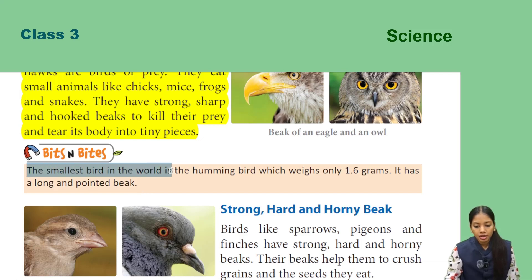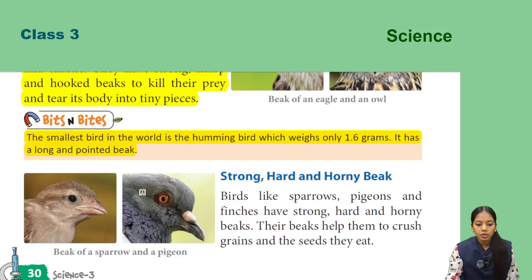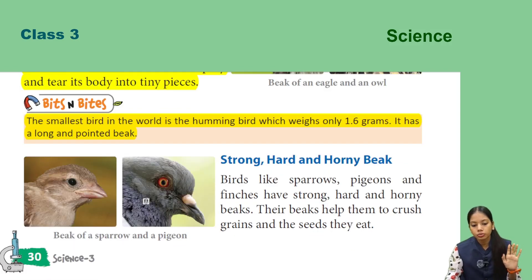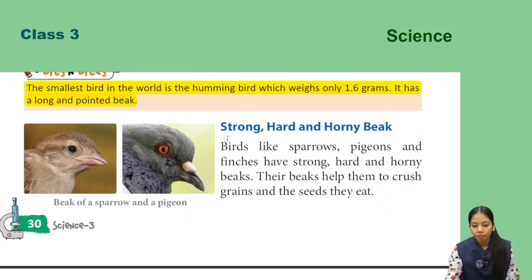The smallest bird in the world is the hummingbird, which weighs only 1.6 grams. It has a long and pointed beak. So the world's smallest bird is the hummingbird, weighing only 1.6 grams, with a long and pointed beak.